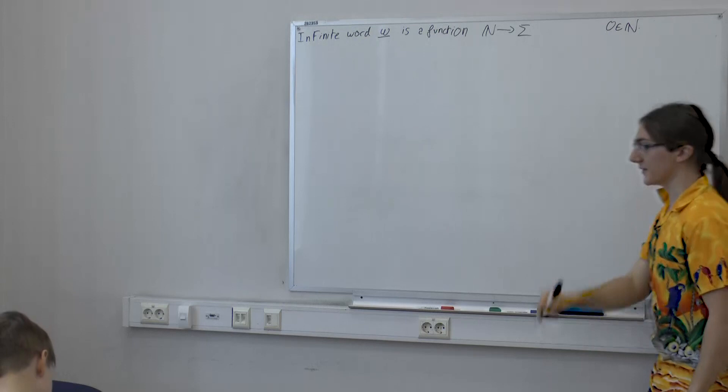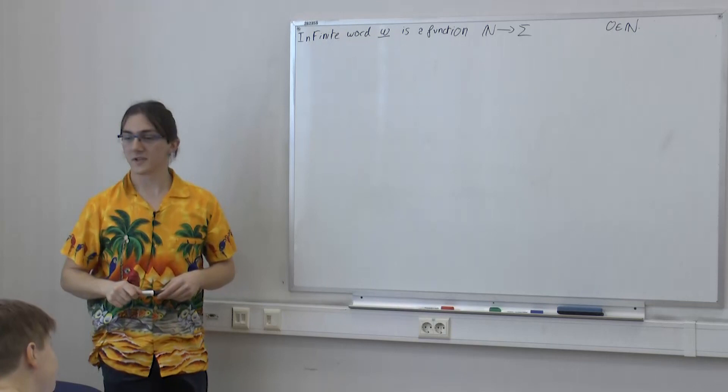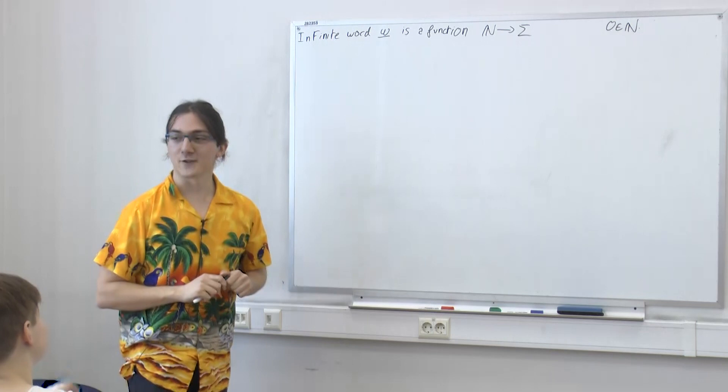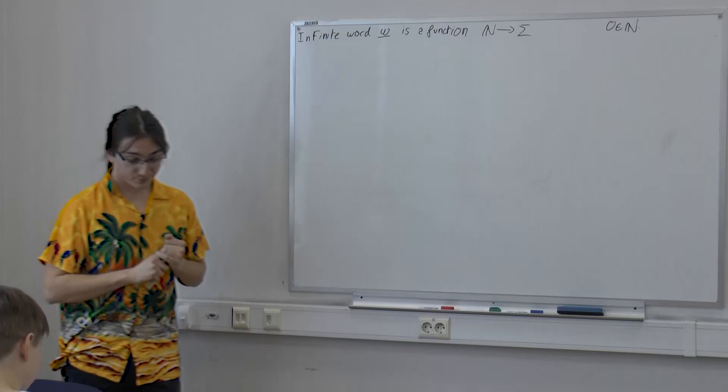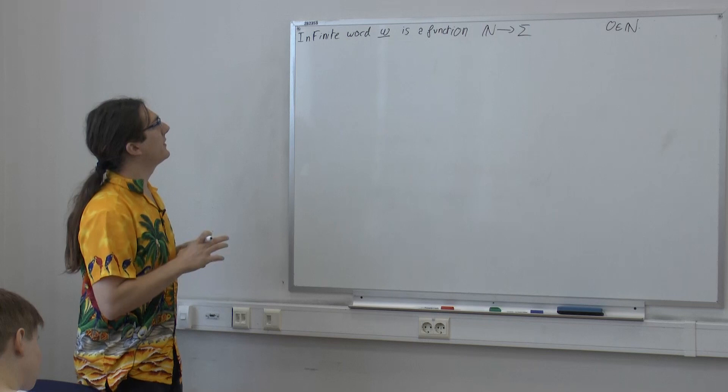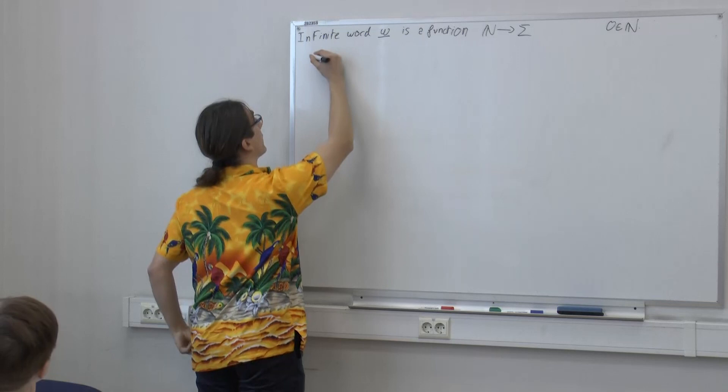In particular, the entrance of this building is on level zero. I have lots of arguments with locals about this. So, what can we do with infinite words? First of all, I will change the notation a little bit, because technically it's a function. If I want to talk about the i-th letter of a word, I can write this — it's just the letter at position i.